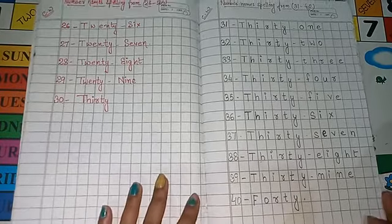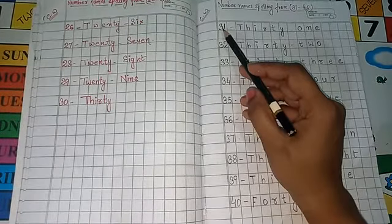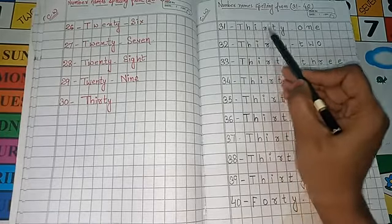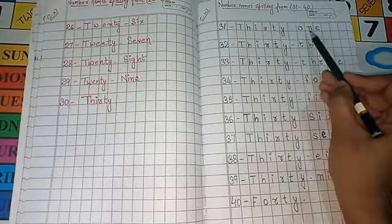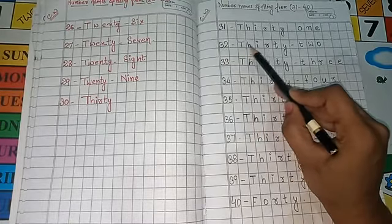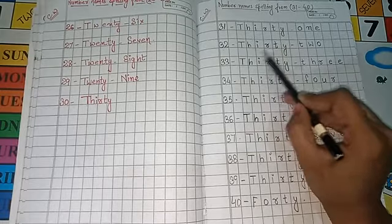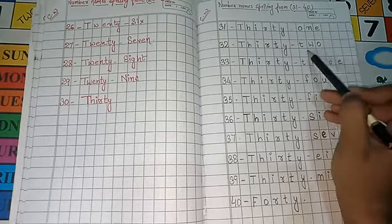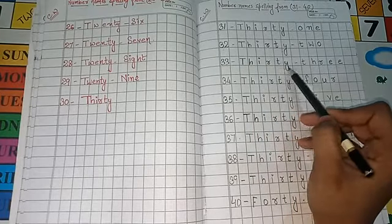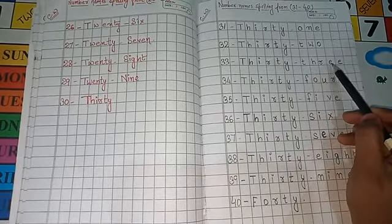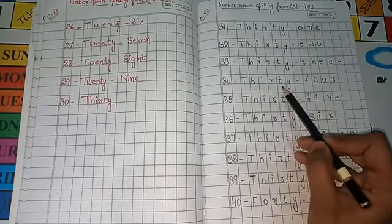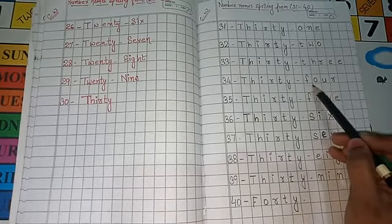So this is your number 31. The spelling of number 31 is T-H-I-R-T-Y, 31, O-N-E, 1. Next 32, T-H-I-R-T-Y, 32, T-W-O. Next 34, T-H-I-R-T-Y, 34, F-O-U-R, 4.